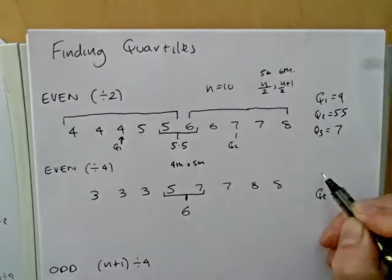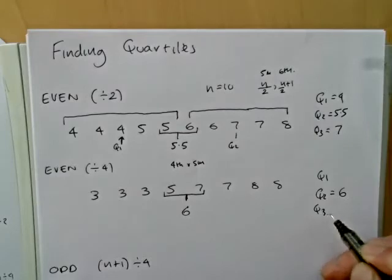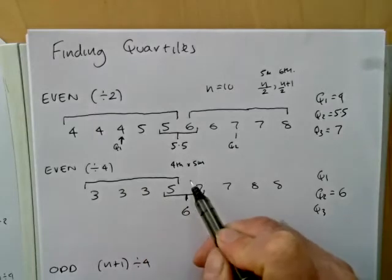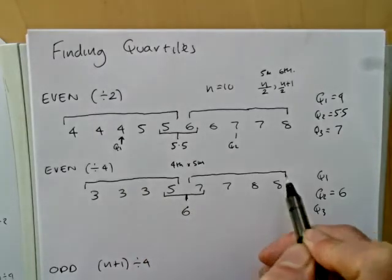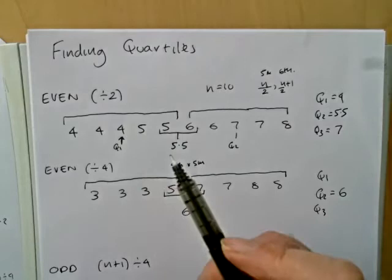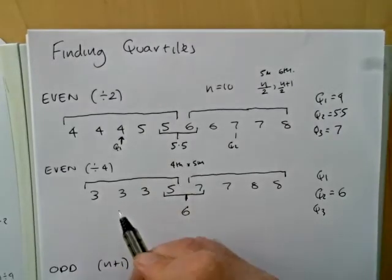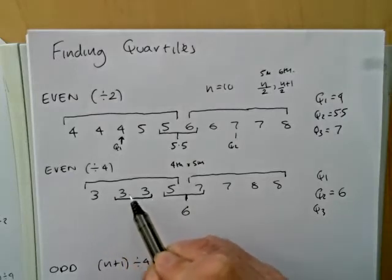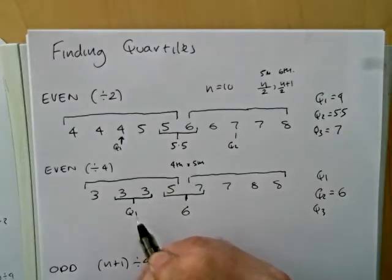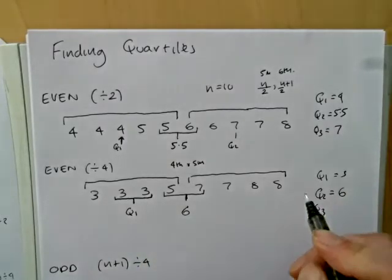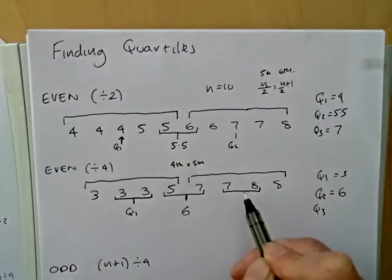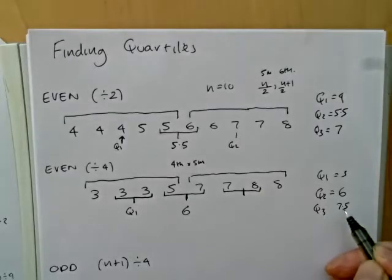But what about the first and third quartiles? This time we have an even number of numbers in our first half and an even number in the second, whereas before we had an odd number. So in finding the median of an even number, the lower quartile will be the same as the median of the first four numbers. As they're both 3, Q1 is going to be 3. If we look at the top four numbers, the middle pair will be the second and third, so the median is 7.5.